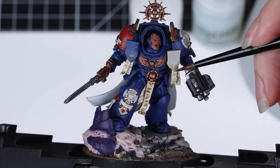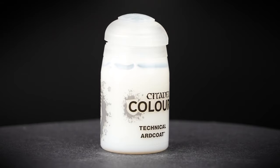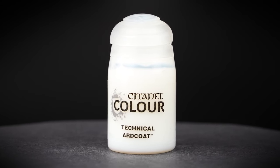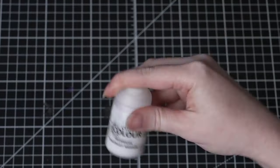The first thing we need to do is prepare the area that we want to apply the transfer to. We're going to start off by applying Ardcoat to the area. This is a gloss varnish and it will help our transfer have something to stick to. Before you use a paint, make sure you give it a good shake. This ensures that it's fully mixed and it's a consistent color throughout.